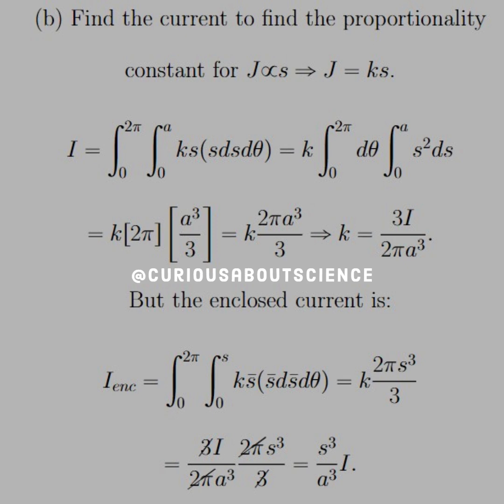And solving this for K gives us 3I over 2 pi A cubed. So now if we enclose it, we can put bars over the S's and execute the same thing, because we don't know how far we're going. We're just going to S, which is what the Amperian loop will determine. So that leaves us, again, with the same integral setup, just with S bars, and instead of going from 0 to A, we're going from 0 to S, leaving us with K 2 pi S cubed over 3.